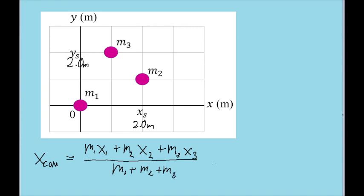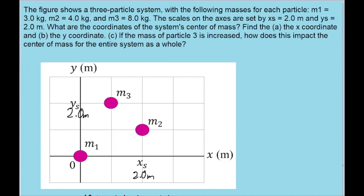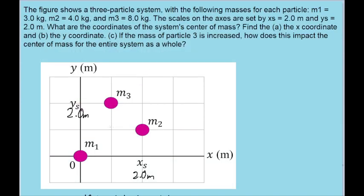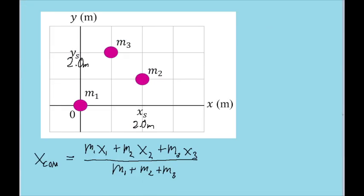So all you have to do for part a, which asks about the x component, is plug the values given to us by the problem into this formula. And note that for particle one, the term just becomes zero because it's at the origin point. So x sub 1 is equal to zero, and that term just kind of disappears. So if you plug our values into the calculator, then what we find is that the x coordinate of the system's center of mass is about 1.1 meters.